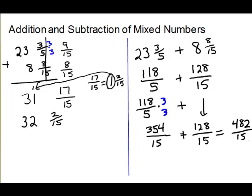Keep the denominator and combine the numerators: 354 plus 128 gives 482 over 15. We want to convert that back to a mixed number to verify. Dividing 15 into 482: three 15s are 45, and 15 into 32 goes 2 times — 2 times 15 is 30, with 2 left over. So the answer is 32 and 2 fifteenths — the same answer. For this particular problem, the horizontal format involved bigger numbers and was a bit more work.